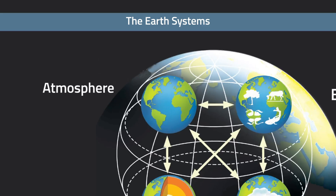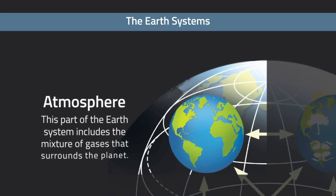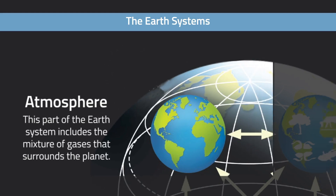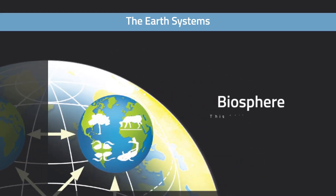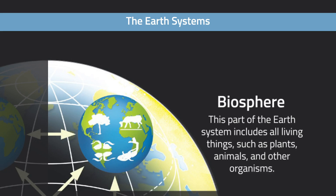The atmosphere is the layer of gaseous envelope that surrounds the planet on the surface and extends thinly into space. Most of the gases are found near the surface and decrease away from the planet with increasing altitude. The biosphere includes all forms of life on Earth, including those found in the deepest parts of the oceans and highest parts of the atmosphere.